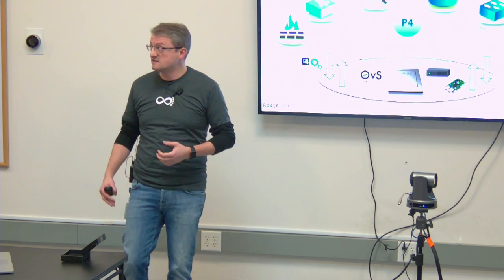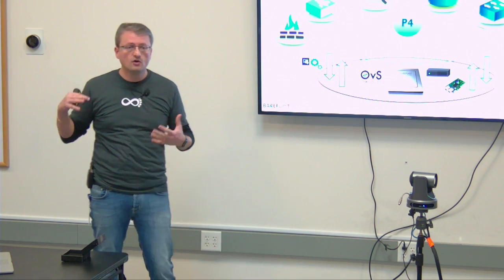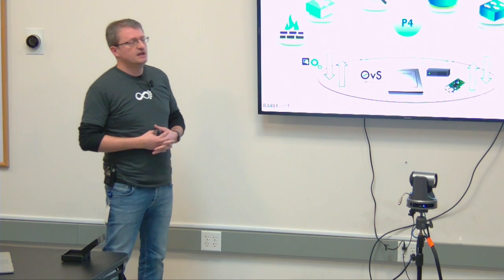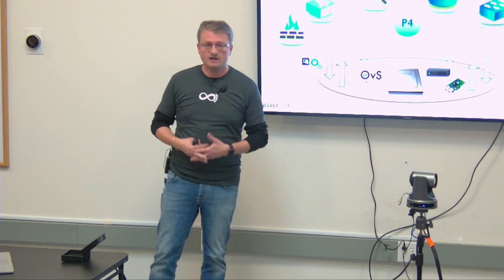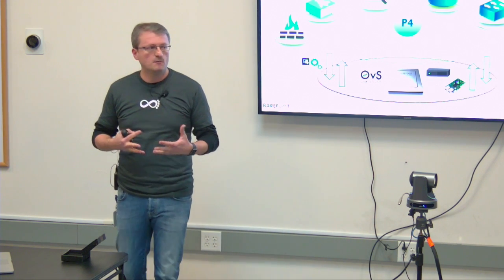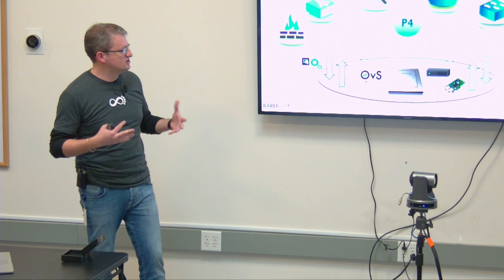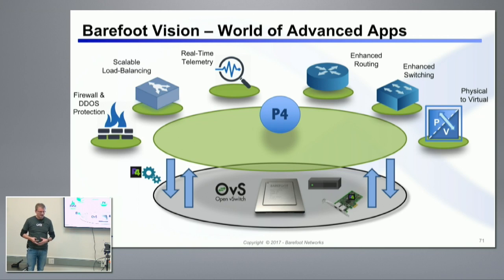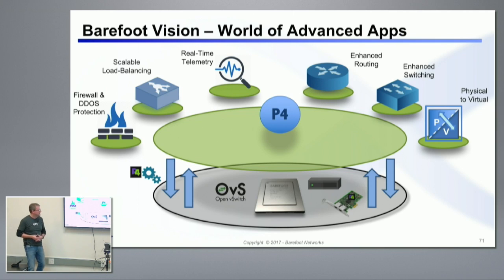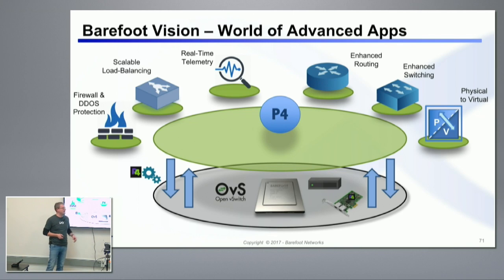One example is OVS. If you Google 'OVS P4', you will find that Ben Pfaff from VMware has been working on developing a P4 model for OVS. What he wants to do is be able to change the way OVS processes packets without going into thousands of lines of OVS modules and software. So you have a lot of flexibility, you have an ecosystem, and you can leverage that.